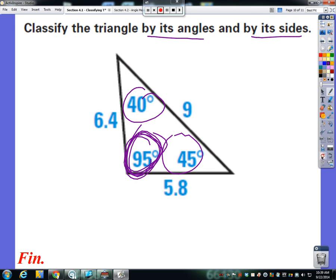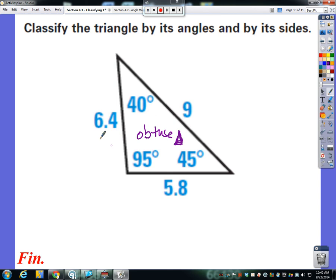If I look at these side measures, I got 6.4, 5.8, and 9, and none of those sides are the same, therefore I would call that scalene.